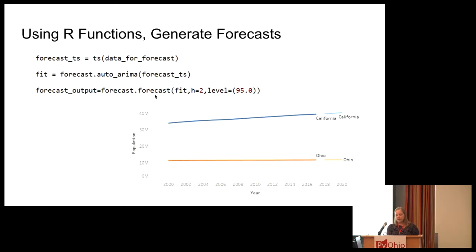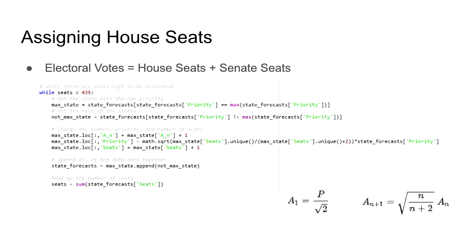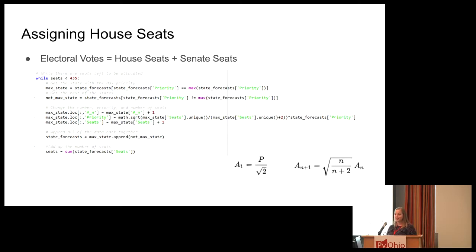Within the forecast package, I can also call forecast on my arima model and forecast it out two periods, since I only have 2018 data and need 2020 data. Then I learned how the U.S. government assigns house seats by population — I thought it was simply proportional, like if California has 25% of the population they get 25% of house seats. That's not how it works. They use square roots and a method established in 1941. The Wikipedia page on it is very interesting. I wrote a small loop to assign house seats based on states.